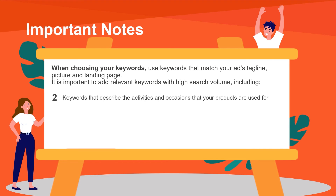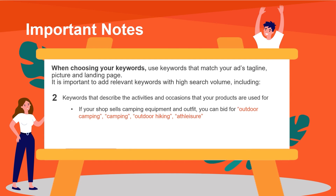Next, add keywords that describe the activities and occasions that your products are used for. If your shop sells camping equipment and outfits, you can bid for outdoor camping, camping, outdoor hiking and athleisure. Finally, add at least 10 keywords.